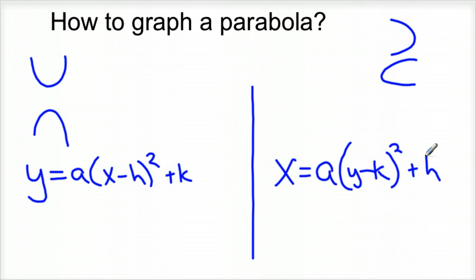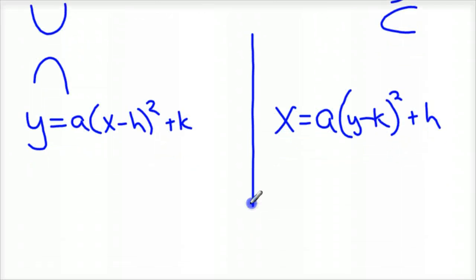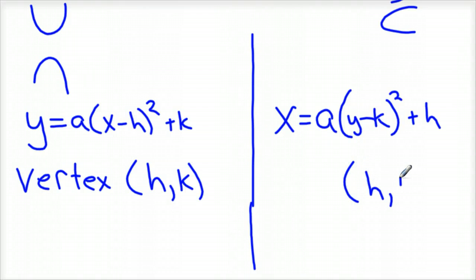The reason I use k and h is because that's generally where your vertex of your parabola lies. The vertex, in both cases, is h comma k. You have to be real careful because this vertex is also h, k, but notice they're in different positions. You have to pull them out differently.